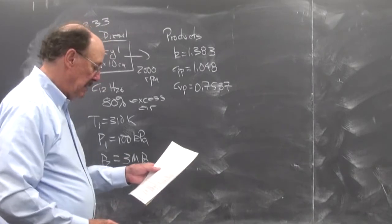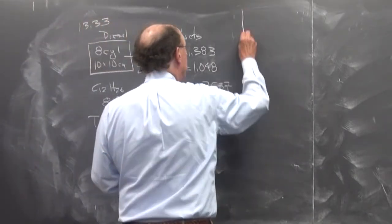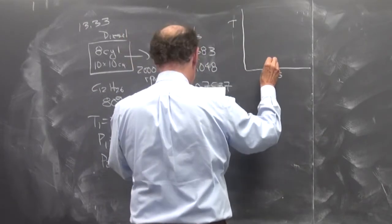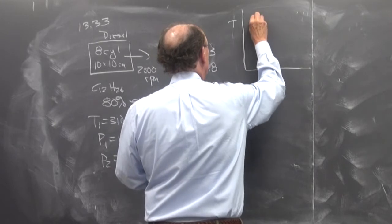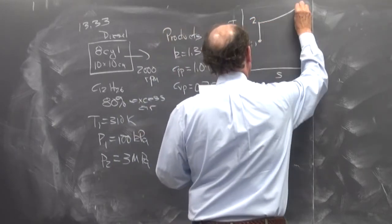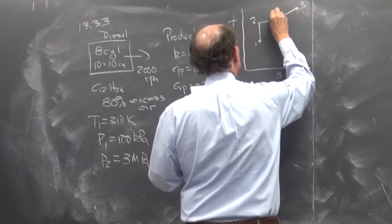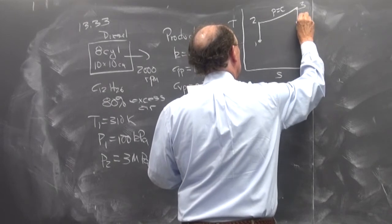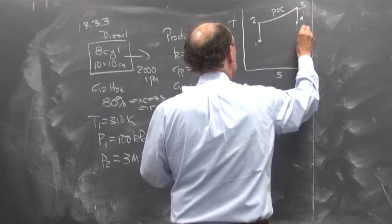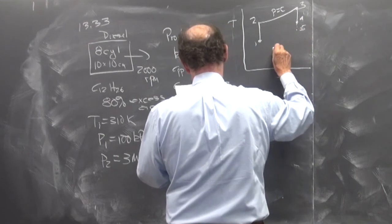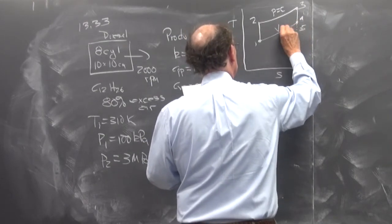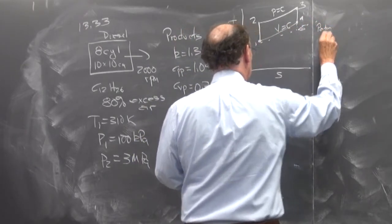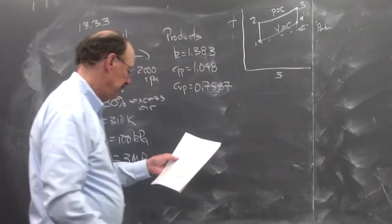And so let's find, oh, let me draw a little TS diagram here. So we have, at least we have some diagram that we can refer to. Here we go down to 2, P equals C, combustion, 3 to 4, then we go down to 5, and then this would be V equals C, and this is P minus C.